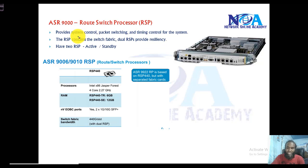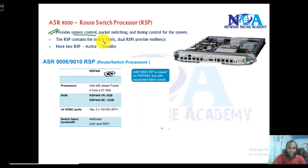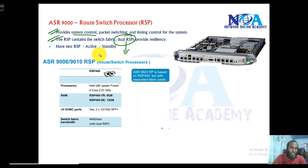Starting with the route switch processor card — this is the main control and switch fabric unit inside the ASR 9000 series routers. In other words, this is like the main processing unit which controls the system and does packet switching. The route switch processor contains switch fabrics and also has dual RSPs, one acting as active and the other as standby.